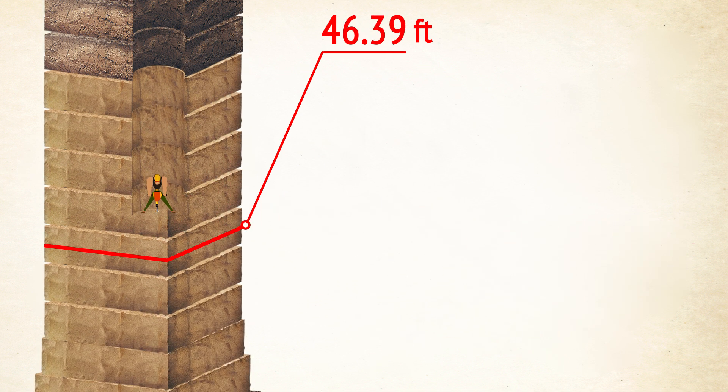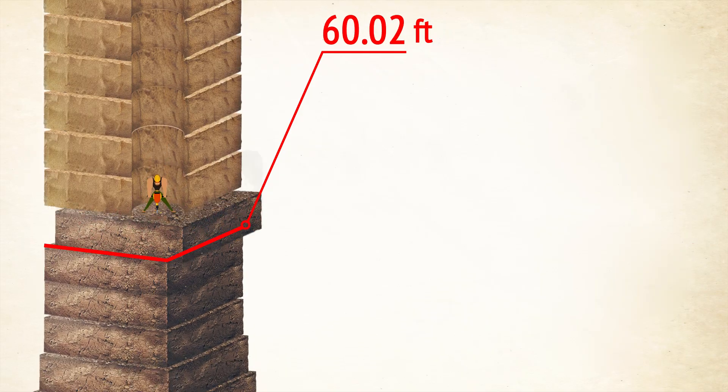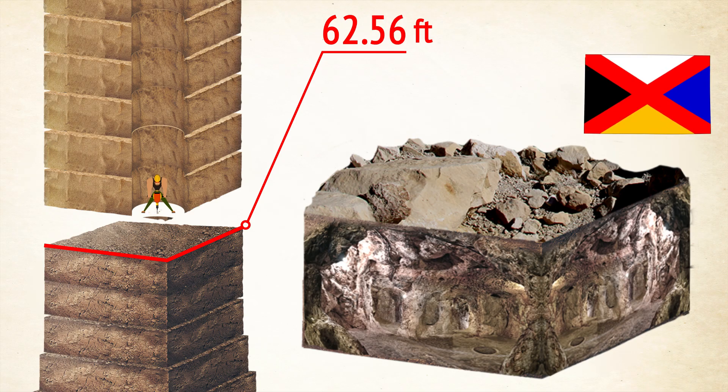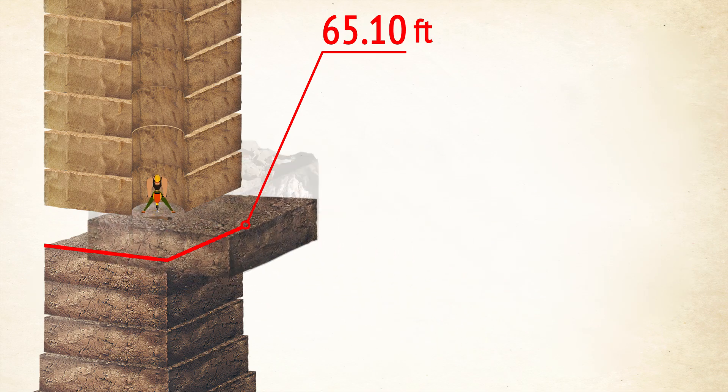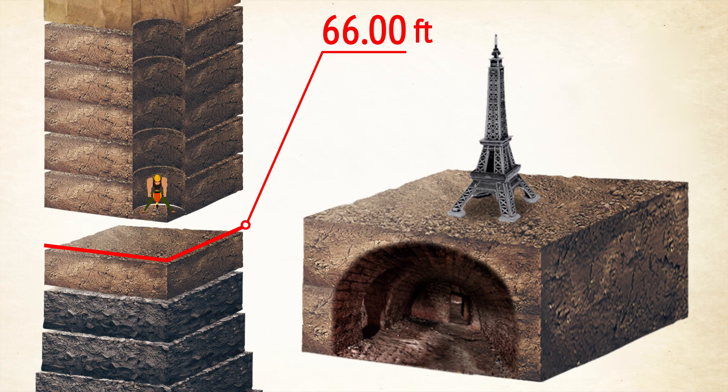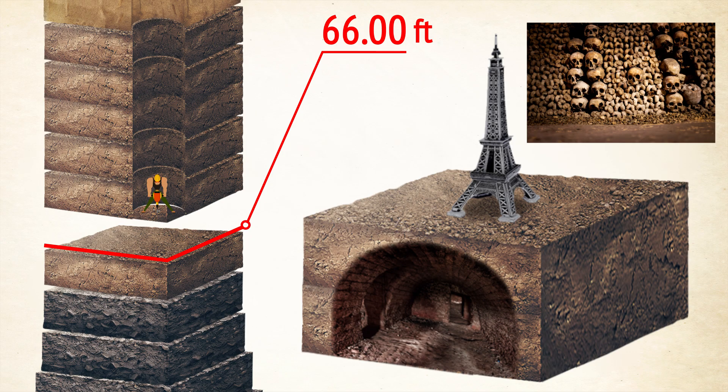When we arrive at a depth of 60 feet, we can see Beijing's Underground City. That's a subterranean bomb shelter consisting of a vast network of tunnels and underground rooms situated under the capital of China. At a depth of 66 feet, the Paris Catacombs are located. They were discovered in the 18th century. These catacombs contain the remains of more than 6 million people.